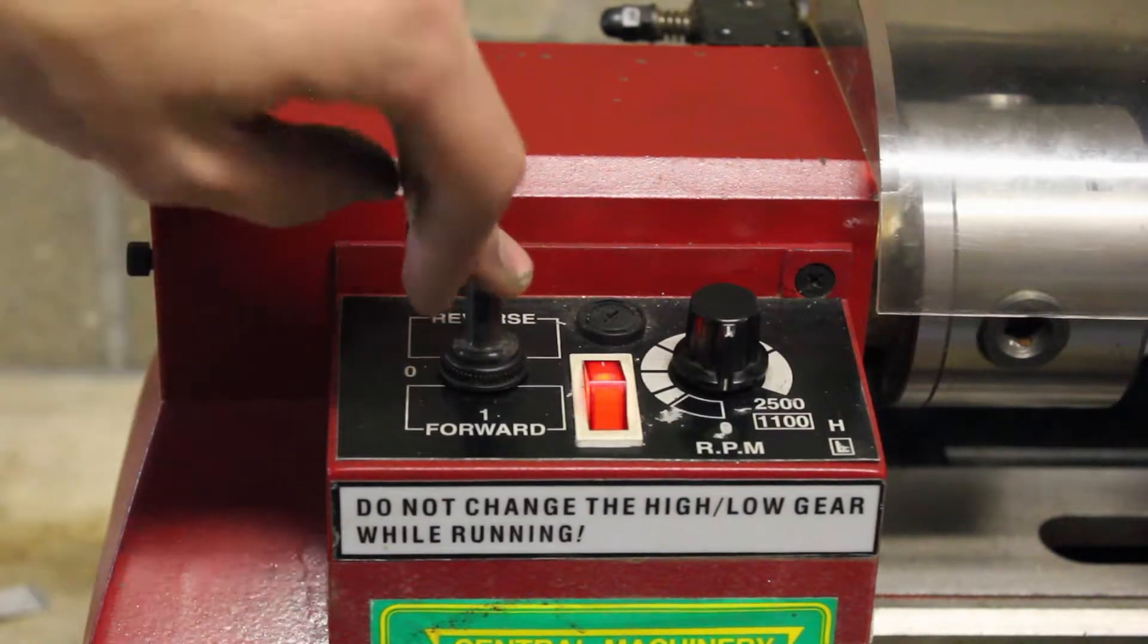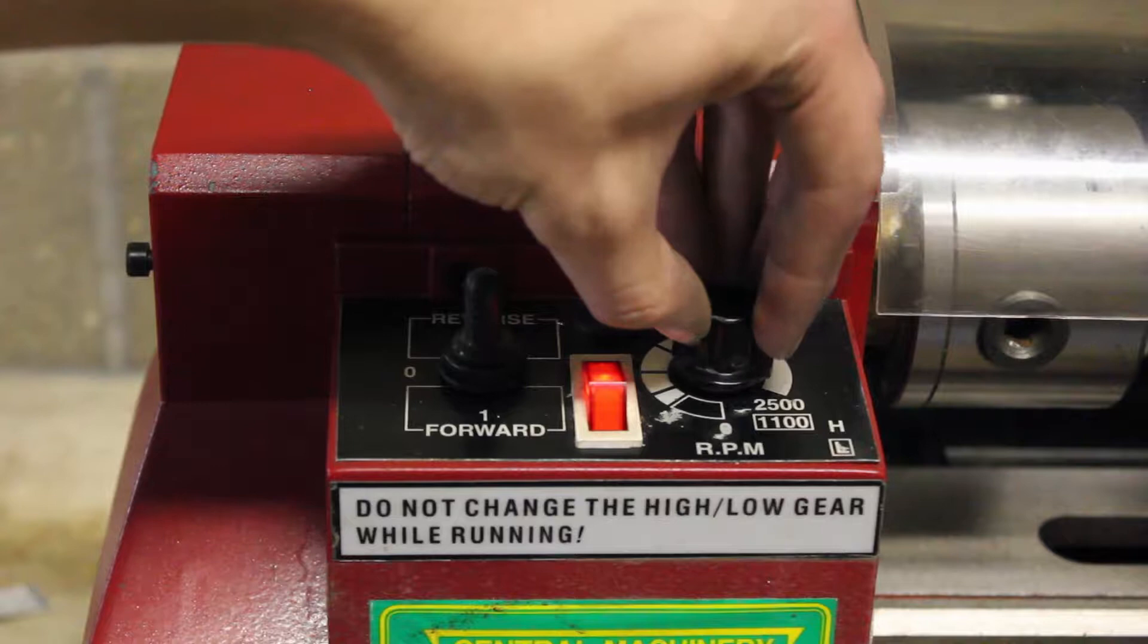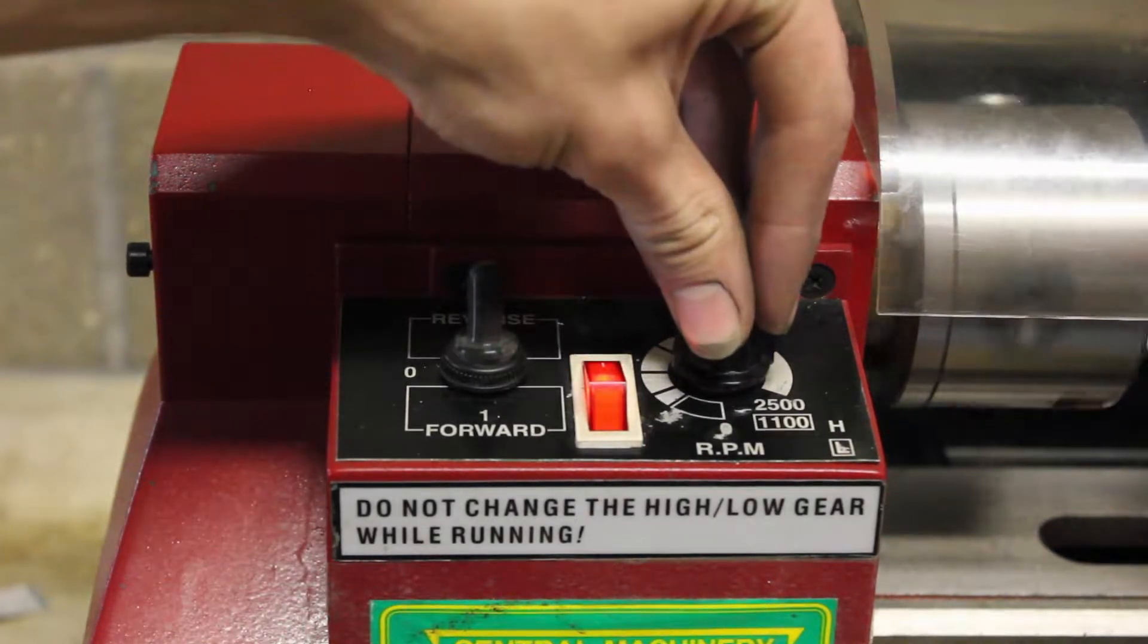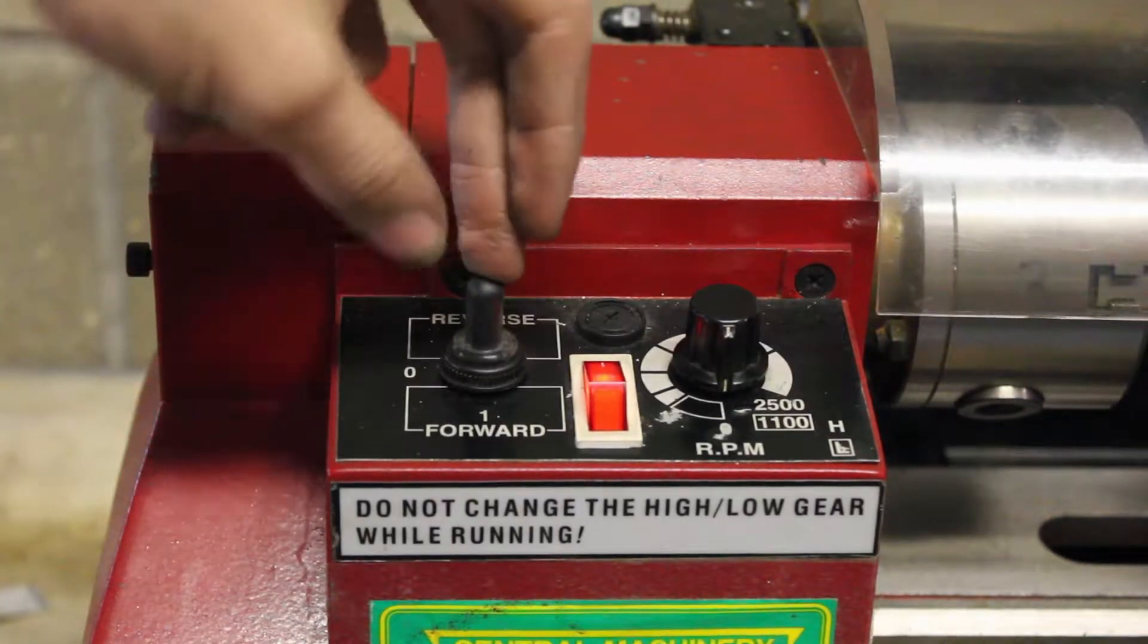So that's how you make it spin that direction. Of course you can go in reverse and now the front will be spinning up. And if it's in neutral it doesn't do anything, it doesn't spin at all.